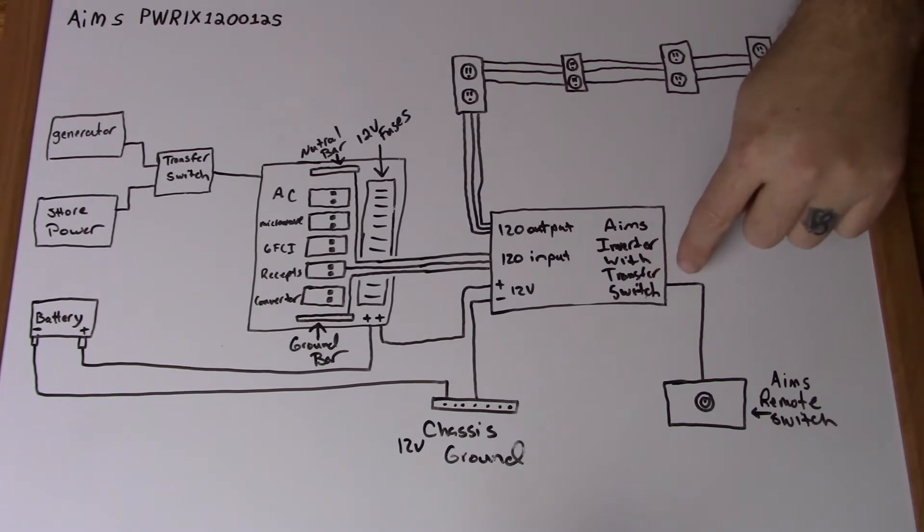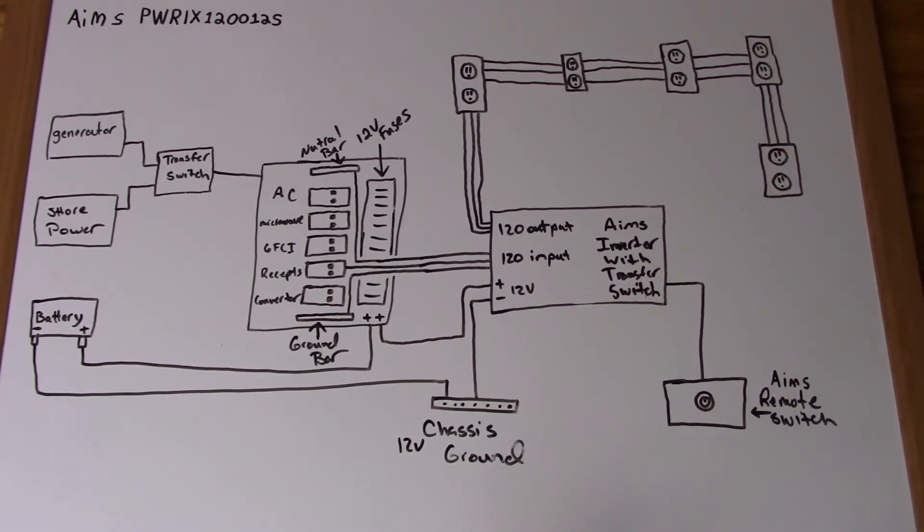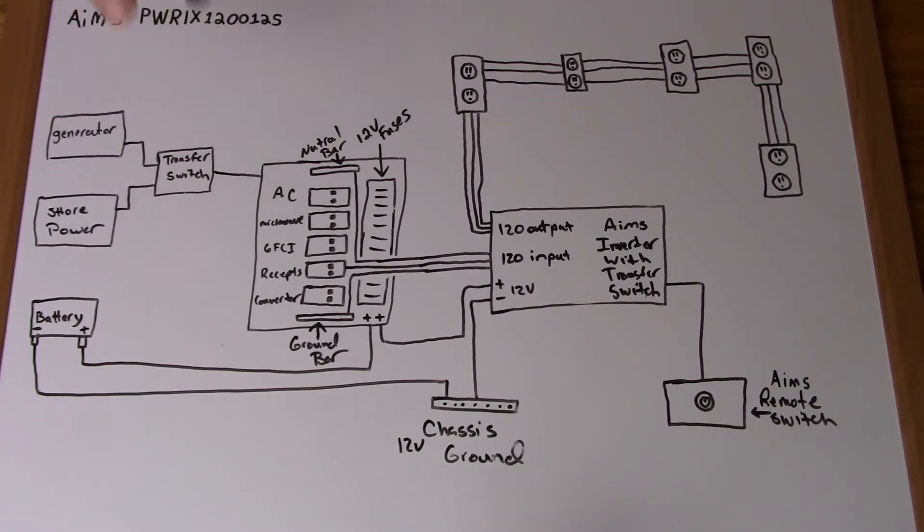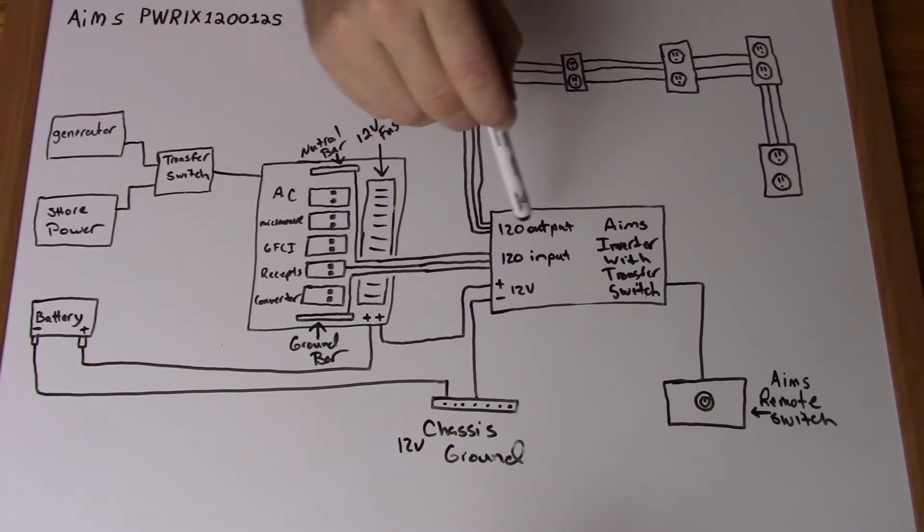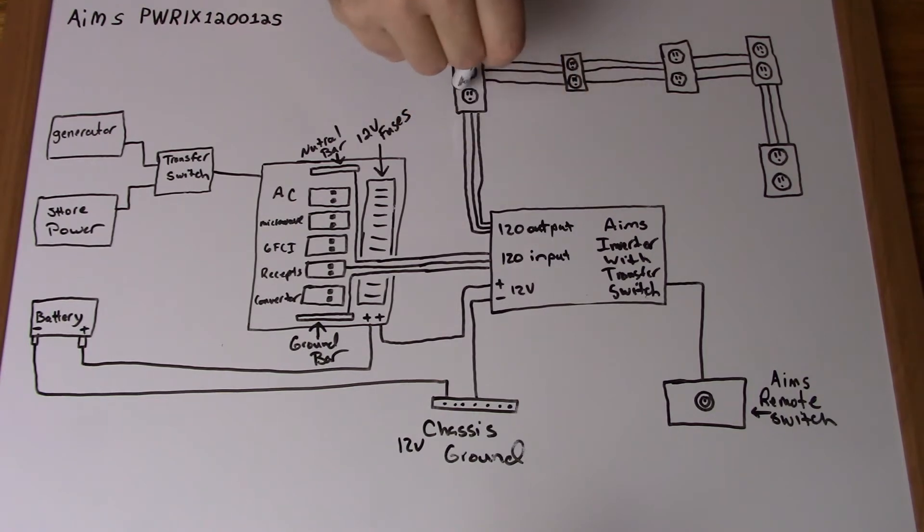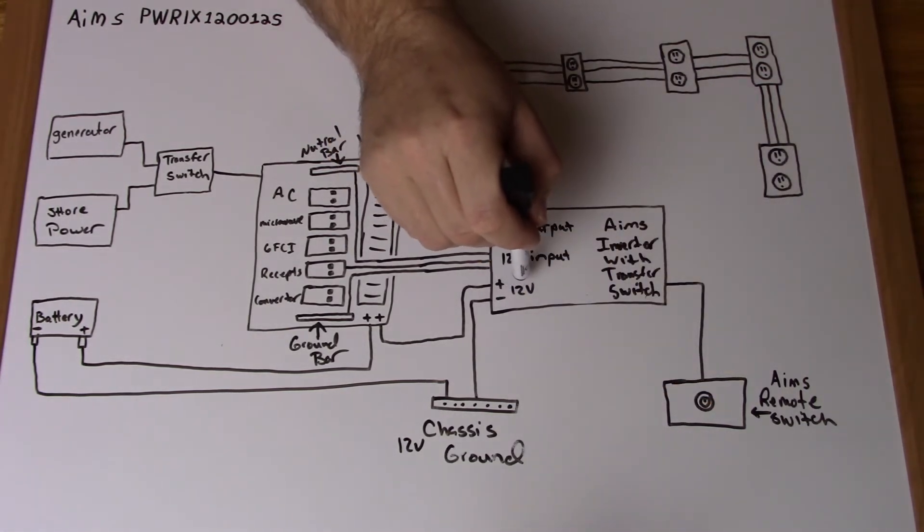We then in turn ran our electrical cord for our switch, which comes pre-wired when you purchase it from Ames, and ran it up front. Now going back to the original video on the inverter, it has a built-in transfer switch similar to the transfer switch that's on the generator and the shore power. The difference is that transfer switch inside of the inverter recognizes if there is 120 volts being fed to the inverter to allow it to pass through and go out to the receptacles themselves. If not, and the inverter is turned on by the power switch, then it in turn inverts the 12 volts to 120 and sends that power out.